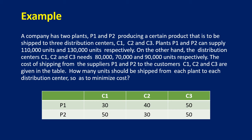Here is an example. A company has two plants, P1 and P2, producing a certain product that is to be shipped to three distribution centers, C1, C2, and C3. Plants P1 and P2 can supply 110,000 units and 130,000 units respectively. On the other hand, the distribution centers C1, C2, and C3 need 80,000, 70,000, and 90,000 units respectively. The cost of shipping from the suppliers P1 and P2 to the customers are given in this table.